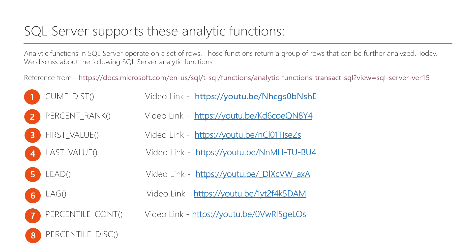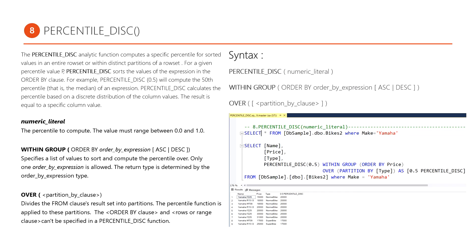In this video we will discuss the PERCENTILE_DISC analytical function, and after that we will discuss the difference between PERCENTILE_CONT and PERCENTILE_DISC. The PERCENTILE_DISC analytical function computes a specific percentage of sorted values in an entire row set or within a distinct partition of a row set.